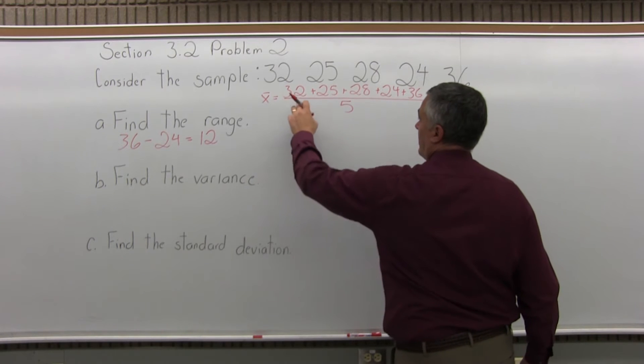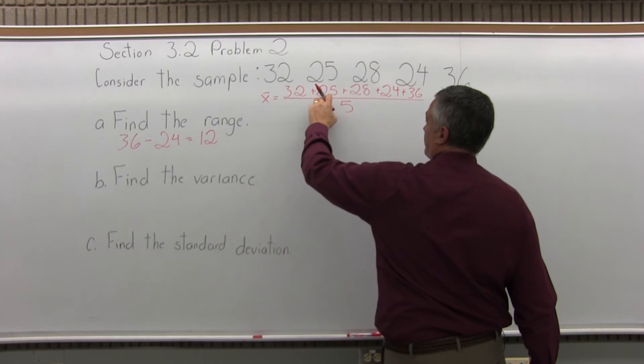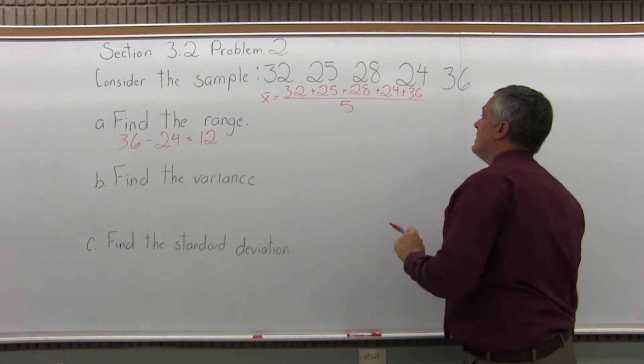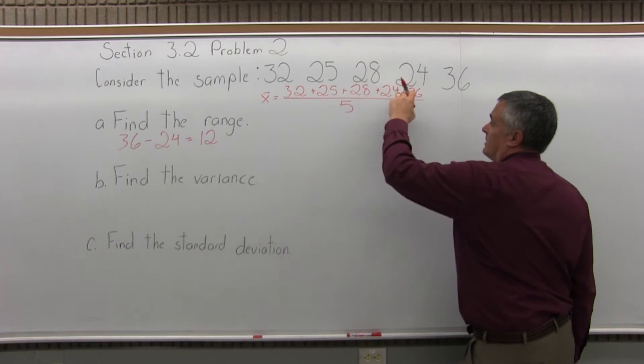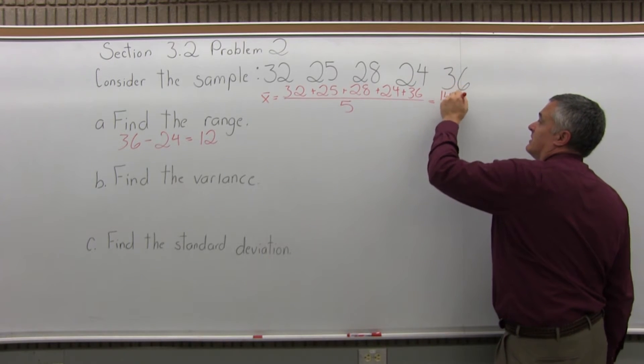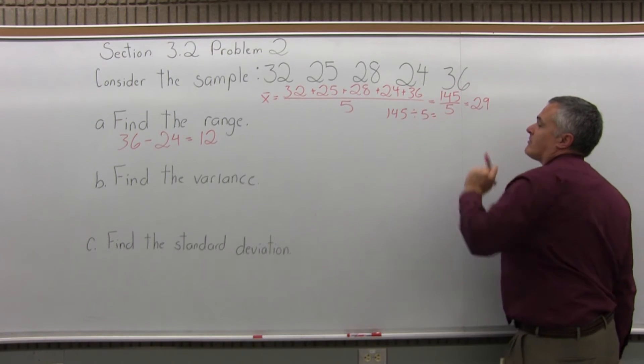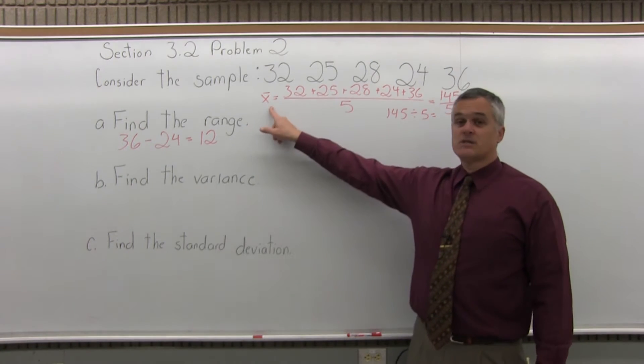Now as we add up the top, 32 plus 25 would be 57. 57 and 28 will be 85. 85 and 24 is 109. 109 plus 36 is 145. And we'll divide that by 5. So that comes up to 29. Again, you can do that with your calculator, 145 divided by 5. So, that's step one. Find the mean, label it X bar.